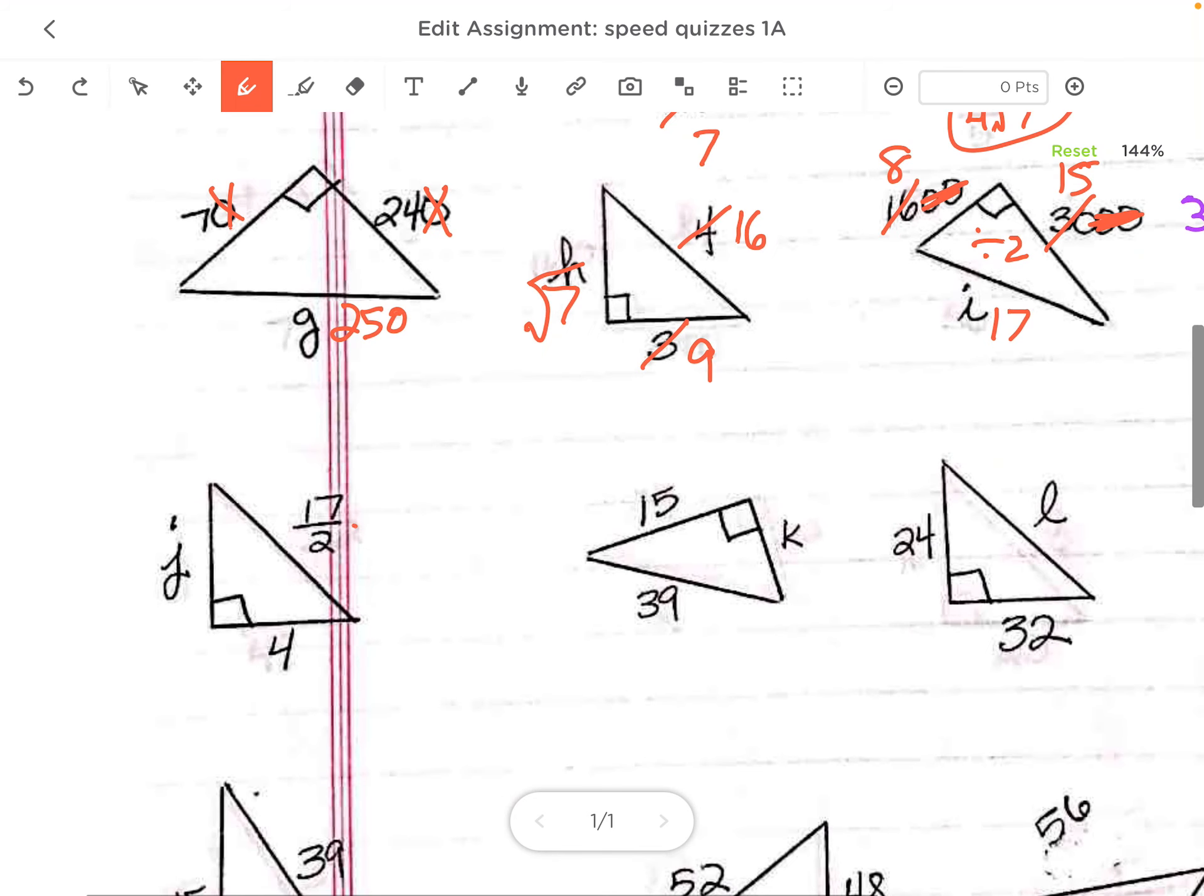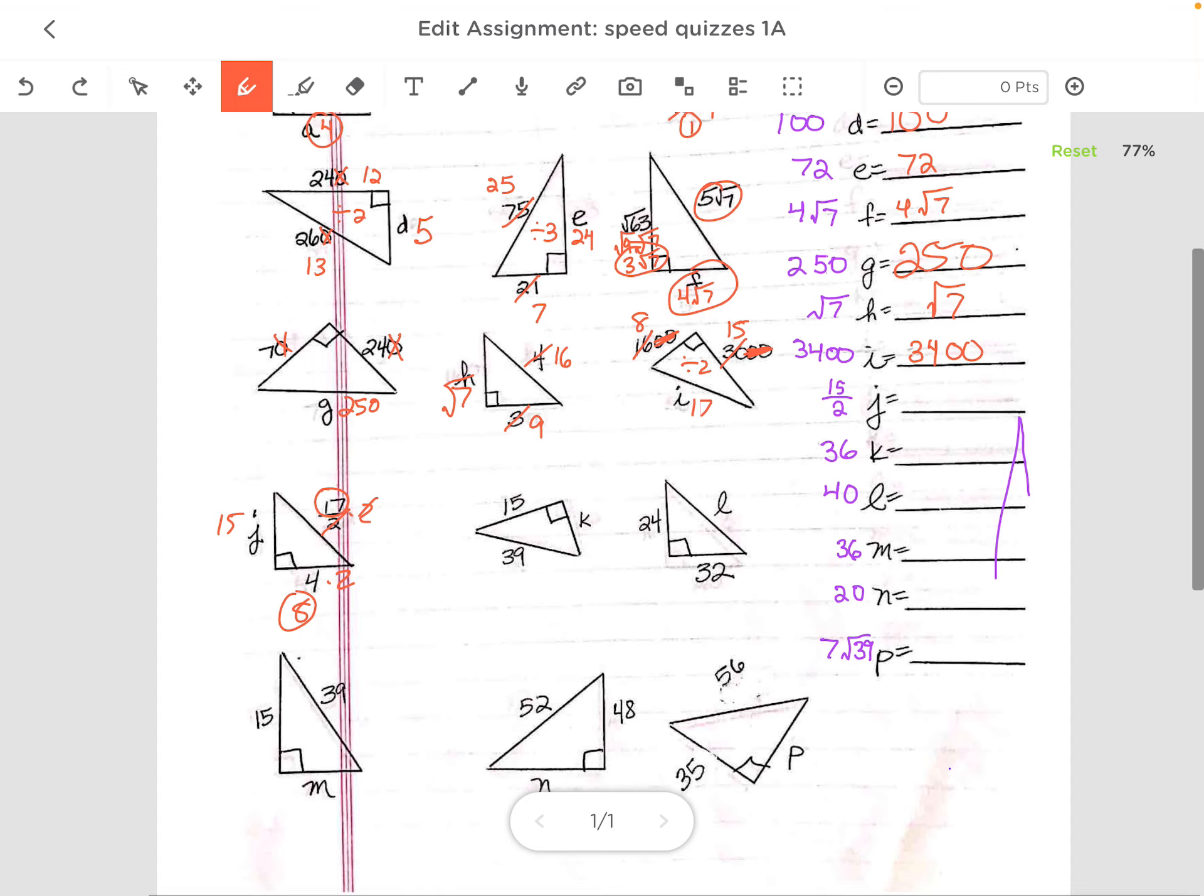Over here, again, multiply by 2 to get rid of that fraction. Multiply by 2. I get 8, 17. Oh, this is probably 15. Again, because I multiplied by 2, I have to divide by 2. So it's 15 divided by 2.